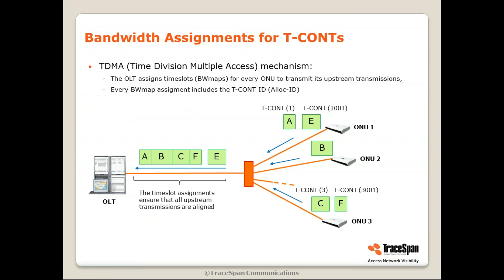Now let's talk about TDMA. TDMA is the way the OLT controls transmission from the ONUs. The network has a shared fiber going from the OLT to the first splitter, and sometimes shared fibers among a smaller number of ONUs. Since all ONUs transmitting upstream use the same media — a shared media — you must control the time slots to avoid collisions.